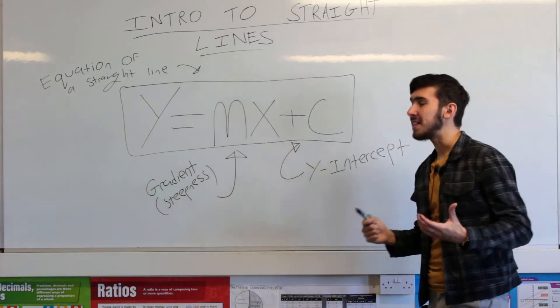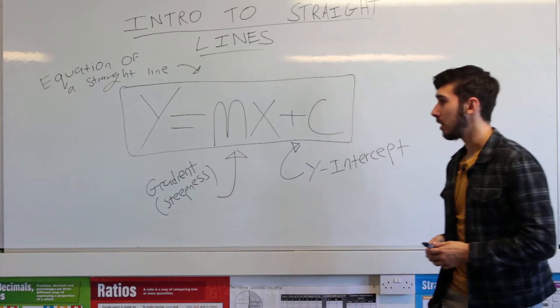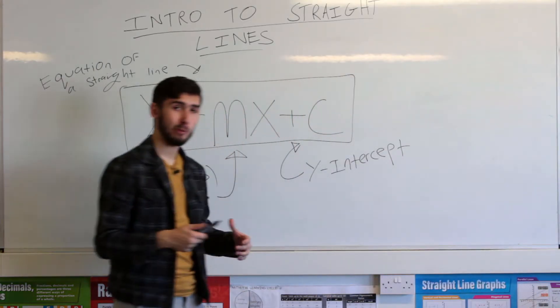So a few things. m is the gradient of the line. Gradient means steepness. How steep is the line? So for instance, I'm just going to do it with my hand before, of course, in future videos we're going to do this more scientifically.